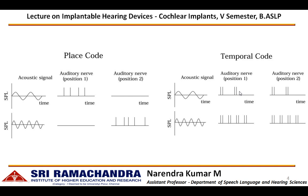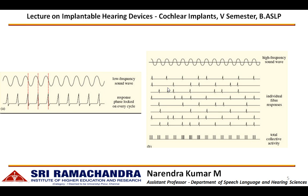All the nerve fibers are capable of firing for all frequencies. So, when the frequency increases, the firing rate also increases and the inter-firing difference reduces, allowing it to code high frequencies as well. This temporal coding can be explained for very low frequencies up to 1000 Hz. For each cycle there will be a neural potential, and this is called phase locking. This phase locking is exact until 1000 Hz.